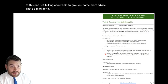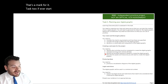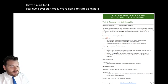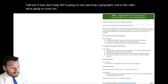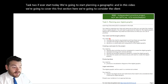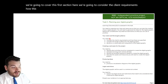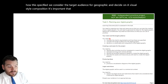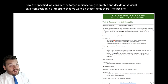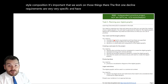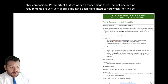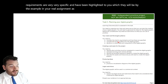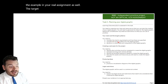Task two is where we start today — we're going to start planning our graphic. In this video we're going to cover the first section: considering the client requirements, how they're specified, considering the target audience for the graphic, and deciding on a visual style and composition. The client requirements are very, very specific and have been highlighted to you — as they will be by the exam board in your real assignment. The target audience, however, is completely up to you.